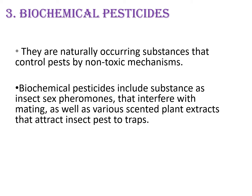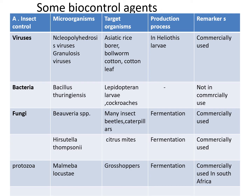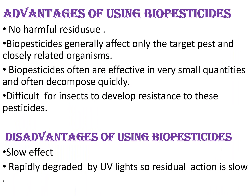Next, biochemical pesticides. Biochemical pesticides are naturally occurring substances that control pests by non-toxic mechanisms. This includes insect sex pheromones that interfere with mating, as well as various scented plant extracts that attract insect pests to traps. This is the table showing some biochemical agents with their targeted organism, production process, and trade marks.